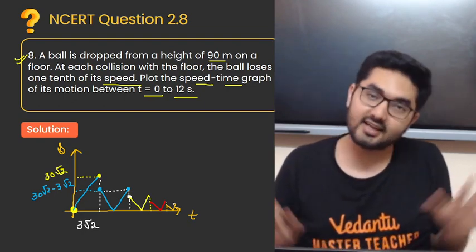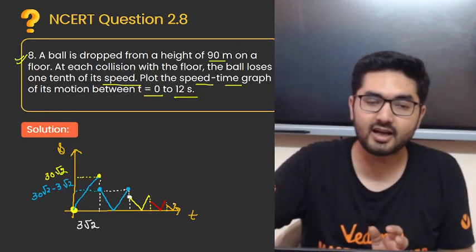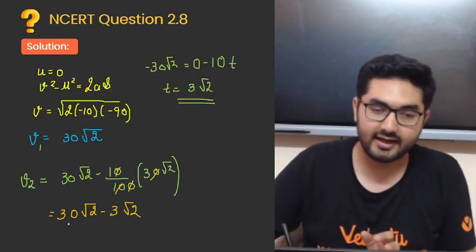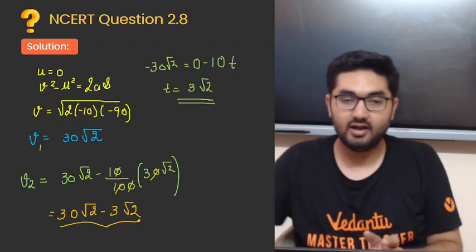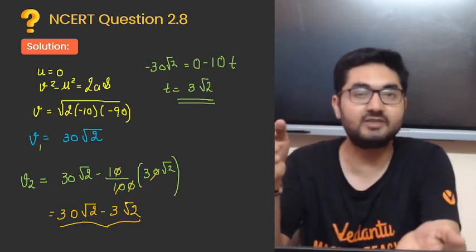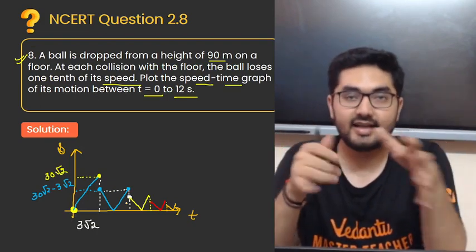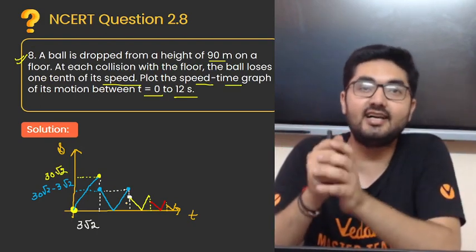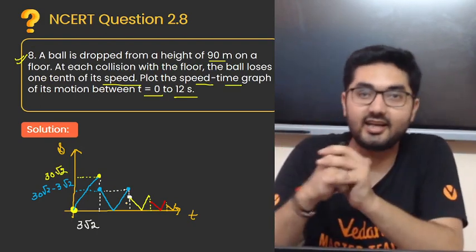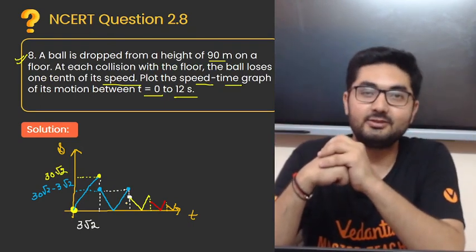So that is it. Yehi ka yehi cheez thi, bahut simple question hai, bas confuse karne ki. Ultimately aapko jitna bhi aage puchha jaye, to aap ye to nikal sakte ho. To usse agle wala velocity kitna hoga, iska, iske andar se iska 10 by 100 subtract kar denge. Bas wohi question tha. I hope you like the answer. Bahut easy tarike se aapko NCERT ki exercise karwane ki koshish ki ja rahi hai is channel mein. Agar abhi tak subscribe nahi kiya, do consider to subscribe to this channel. Thank you.